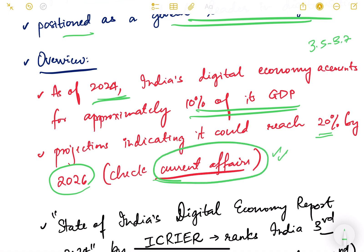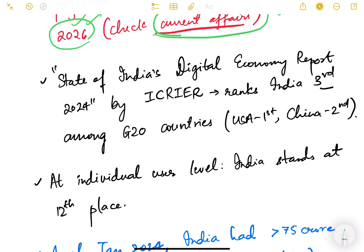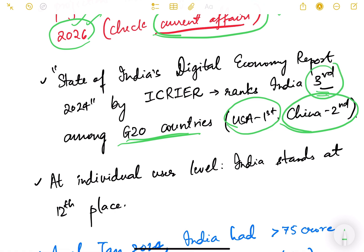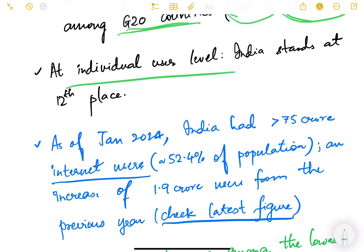Whenever you are watching this video — in 2025, 2026, or later — do check if this projection has come true by checking current affairs. According to the State of India's Digital Economy Report 2024, India ranks third among G20 countries. The USA is first, China is second, and India is third — making us a definite leader in digitalization.